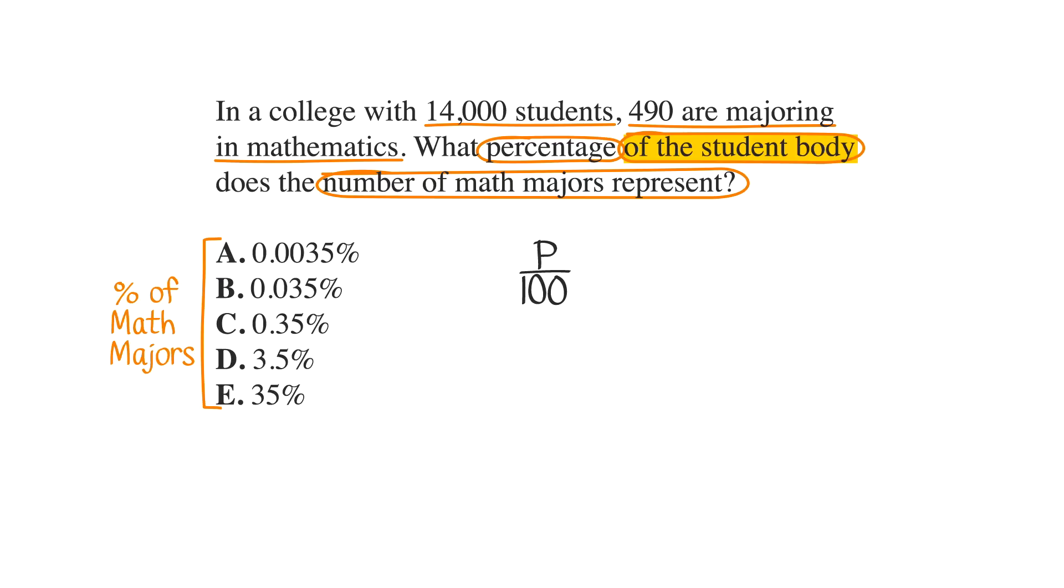Of means multiply. Of the student body means times the student body, which is 14,000. So we can write P over 100 times 14,000.